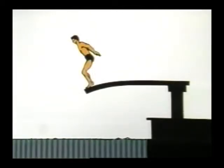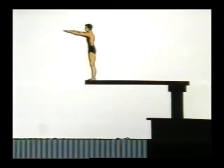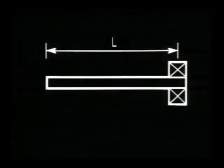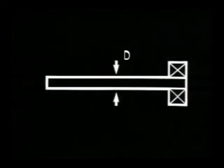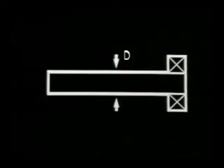The amount of movement at the end of the board will depend on the length of the overhang and the thickness of the board. The deflection is reduced when the thickness D is increased.